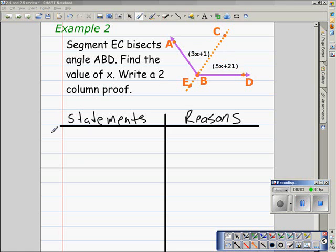In our given, we're told that segment EC bisects angle ABD.